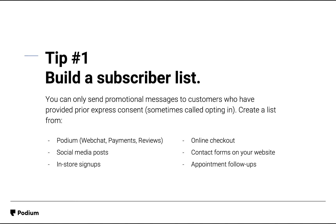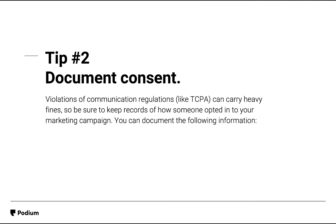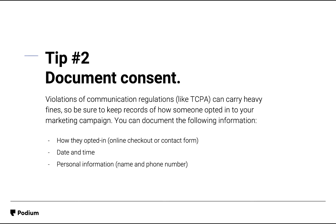You'll notice that over time, you'll gain new subscribers and others will opt out. You'll want to make it a priority to keep your list up to date. Violations of communication regulations like the TCPA can carry heavy fines. To help protect yourself legally, you must document how someone opted in, when they opted in, their personal information, and their IP address.